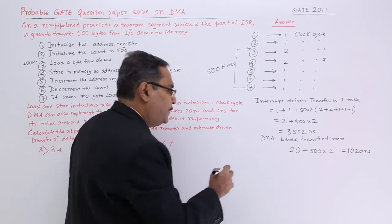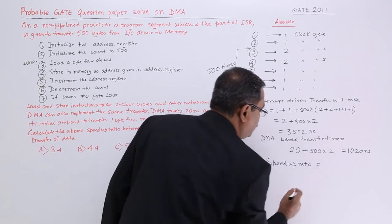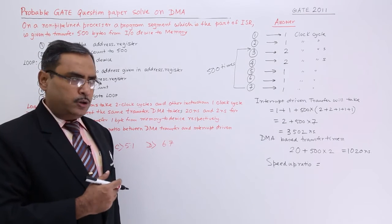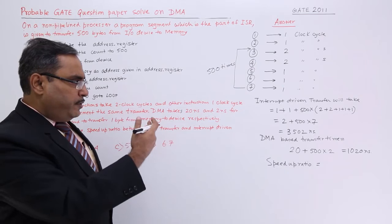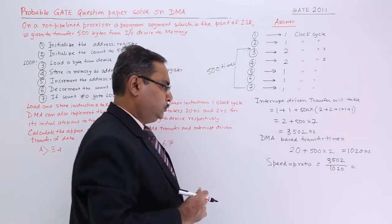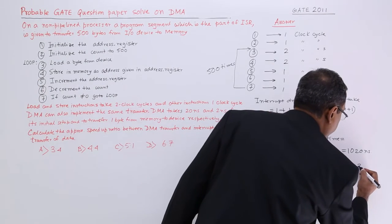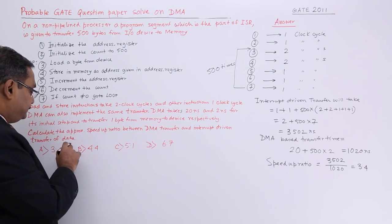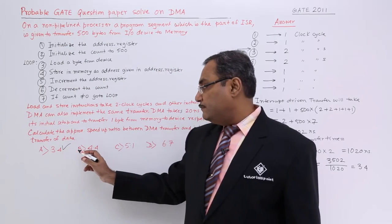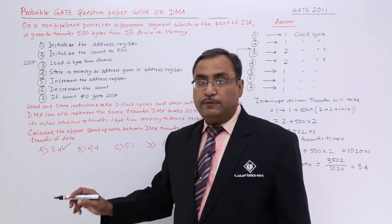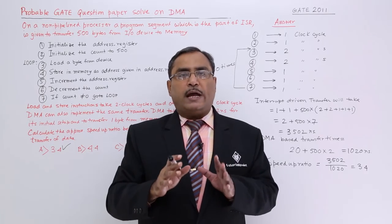To calculate the speed-up ratio, we take the interrupt-driven transfer time divided by the DMA-driven transfer time: 3502 / 1020 ≈ 3.4. So the speed-up ratio is 3.4, which matches one of the given options. The other options — 4.4, 5.1, and 6.7 — are far from this value, so the answer is 3.4.